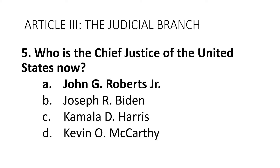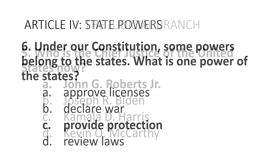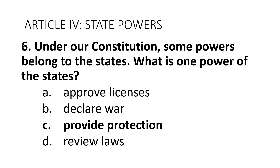Question 5: Who is the Chief Justice of the United States now? Answer A: John G. Roberts, Jr. You can also simply say John Roberts. Question 6: Under our Constitution, some powers belong to the states. What is one power of the states? Answer C: Provide protection, which includes the police. You can also say provide schooling and education, provide safety, the fire department, give driver's license, and approve zoning and land use.